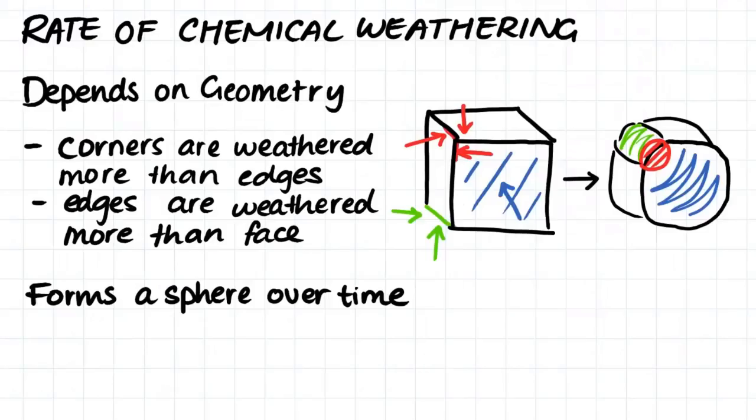Another thing that affects the rate of chemical weathering is the geometry of the rock being weathered. As we can see in this image here, the corner of the rock has three directions in which it can be weathered and therefore will weather more quickly than the edge of the rock, which has two directions along which it can be weathered. This will then weather more quickly than the face of the rock, which can only be weathered in one direction. This is why blocks of rock often develop into spherical shapes.